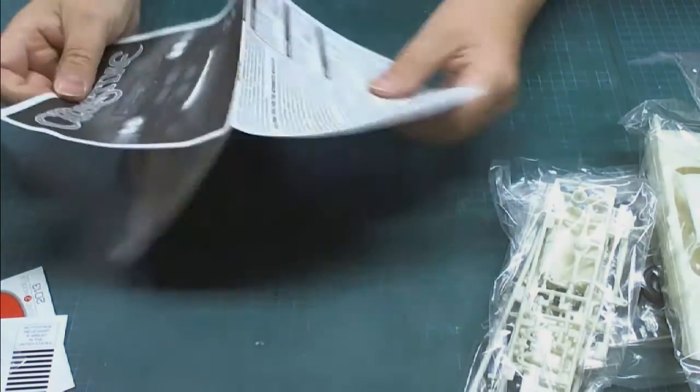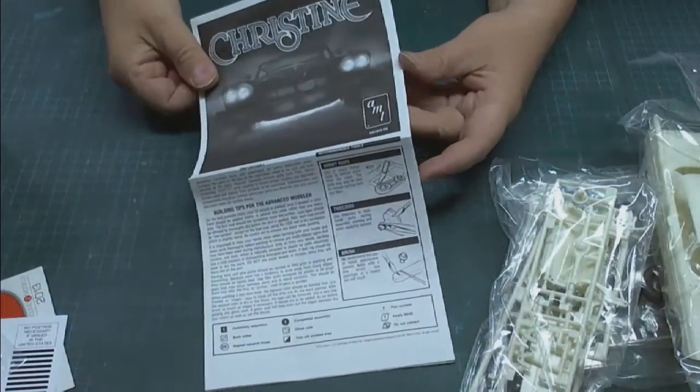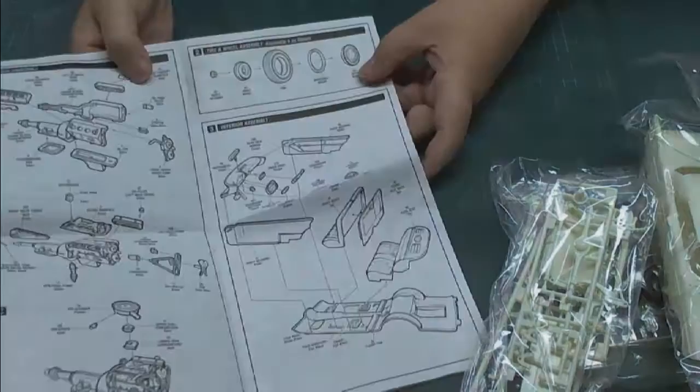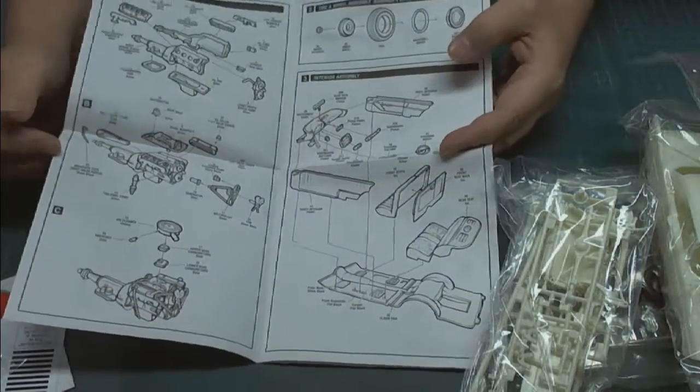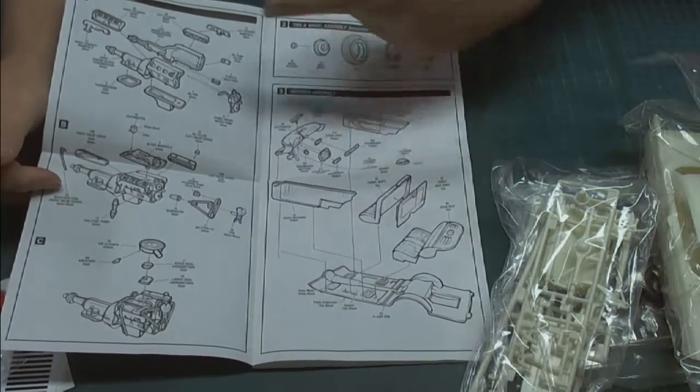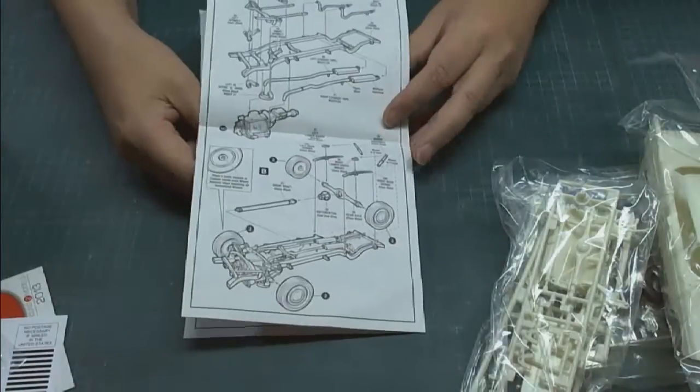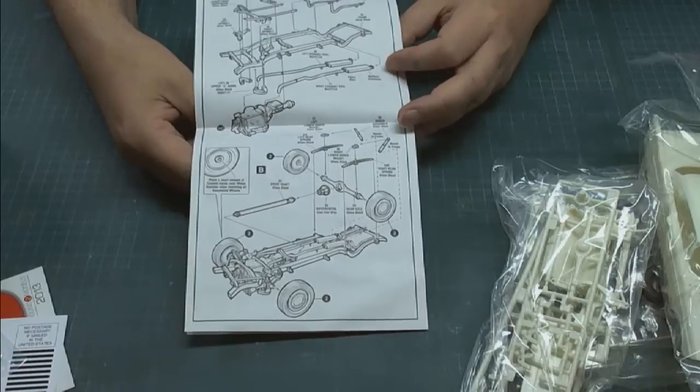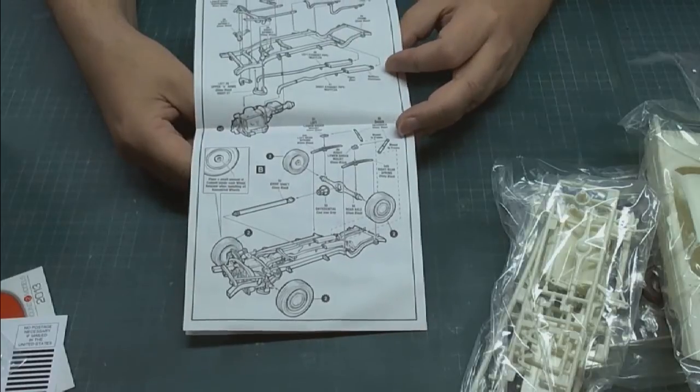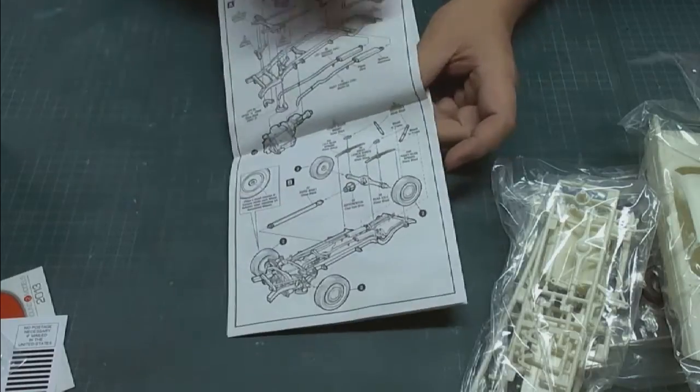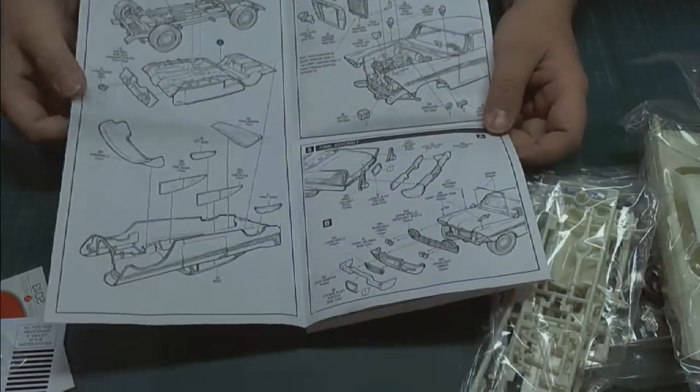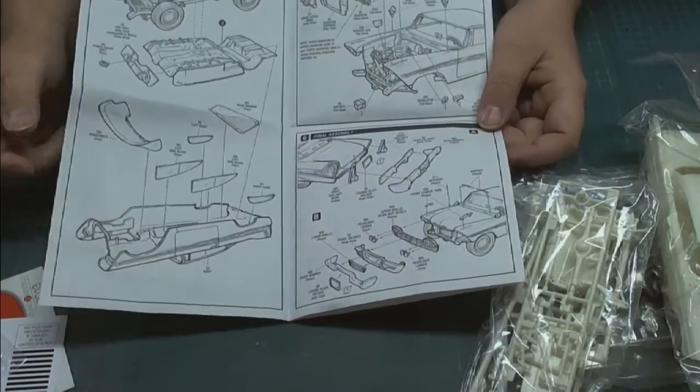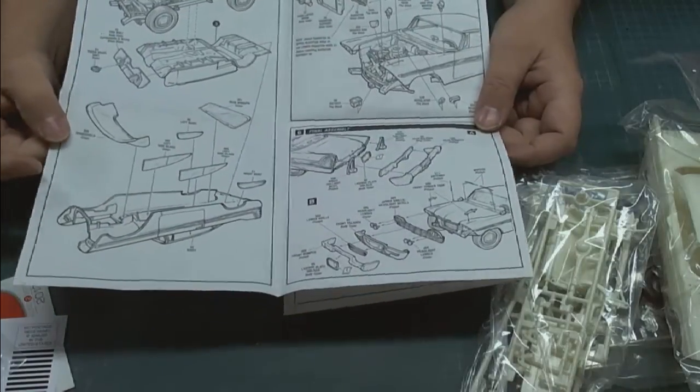Let's have a look at the instructions. The instructions are tri-folded piece of paper. You open them up, you can see there's your assembly of the engine, the interior, the tires, and then we slip over to the chassis showing you where all of the piping goes for your exhaust, how to put your wheels on. Then you continue on by unfolding and we see that we have the interior along with the body, where to put all the clear parts.